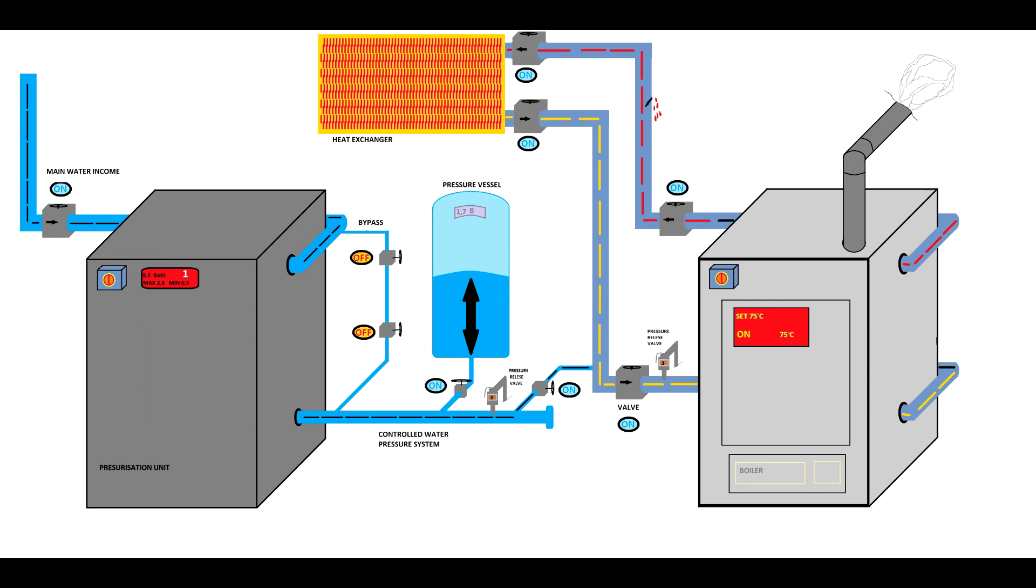If you have a leak, the pressurization unit starts counting. Some very old pressurization units will push water into the system constantly and flood the premises. Modern units will push water from one to one hundred times—it's up to you. I usually allow them to push water only ten times, and after ten times they will stop.